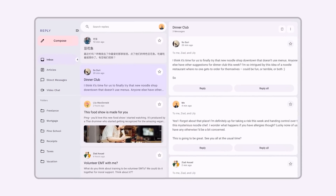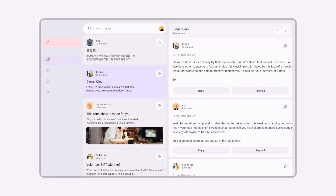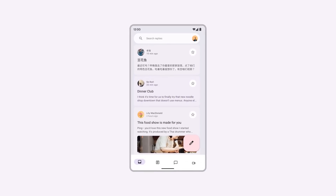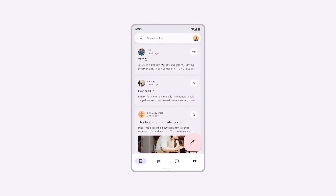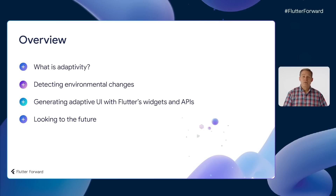All apps respond to changes in the form of user input, but an adaptive app also responds to the state of the environment. This creates an app that feels natural to the user wherever they use the app. In this talk, we're going to give you some ideas of how to detect changes in the environment and generate adaptive user interfaces using Flutter's widgets and APIs, based on our learnings from building adaptivity into Flutter itself.